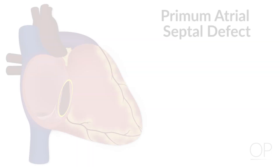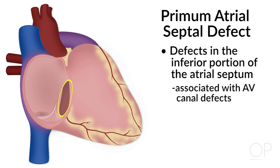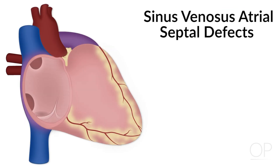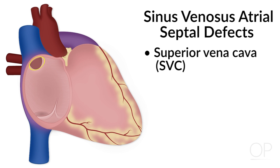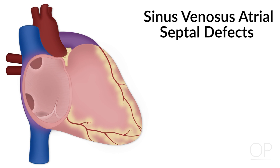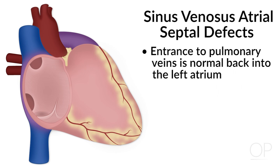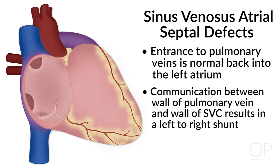The second most common type is Primum Defects, which occur in the inferior level of the atrial septum. They're often associated with AV Canal Defects, but don't always have to be. The last type are the Sinus Venosus Atrial Septal Defects, which fan out into two categories: those involving the Superior Vena Cava, the most common, and those involving the Inferior Vena Cava. These are essentially a defect in the lumen of the SVC and the lumen of a pulmonary vein creating a communication, and because there's a communication between the wall of the pulmonary vein and the wall of the Superior Vena Cava, a left-to-right shunt occurs.